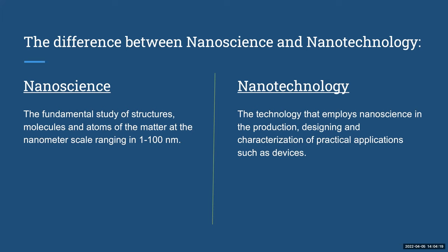The difference between nanoscience and nanotechnology: nanoscience is the fundamental study of structures, molecules, and atoms of matter at the nanometer scale, ranging from one to 100 nanometers. It is the study of manipulation of structure at a supra-molecular level. Nanoscience establishes the knowledge ground for nanotechnology, which employs nanoscience in the production, designing, and characterization of practical applications such as devices.